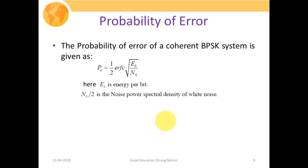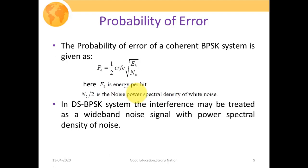The next performance parameter is probability of error. For a coherent BPSK system, the probability of error is given as (1/2) × ERFC(√(Eb/N0)), where ERFC is the complementary error function, Eb is energy per bit, and N0/2 is the noise power spectral density of white noise. In a direct sequence BPSK system, the interference may be treated as a wide band noise signal with a power spectral density, since expanding the signal bandwidth with constant power reduces the power spectral density, making it noise-like.